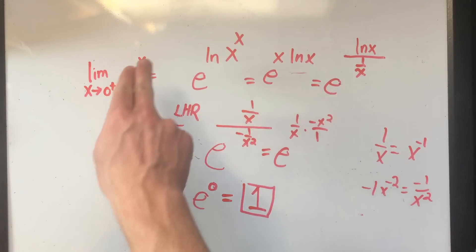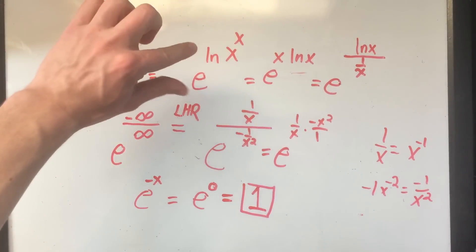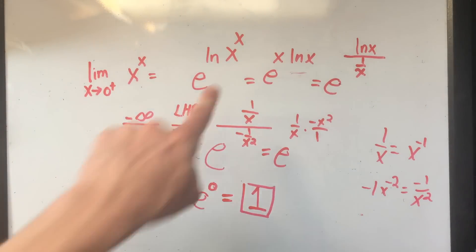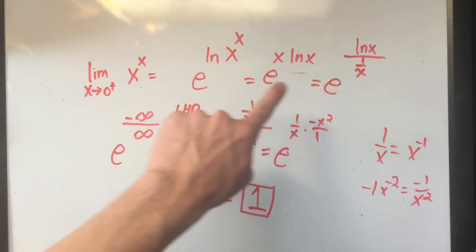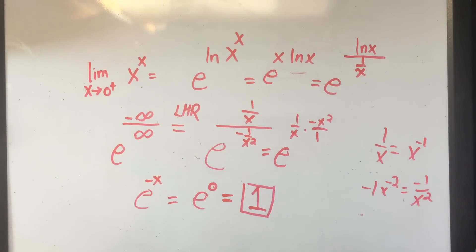So just remember, when you've got a variable to a variable power, you can use this e ln trick, and then bring down the power and write it like a fraction, and then apply L'Hopital's rule. Thanks for watching, and if you have any questions, comment below.